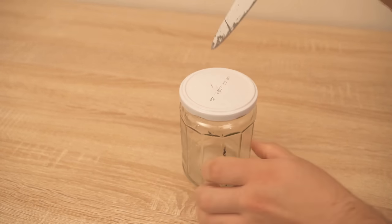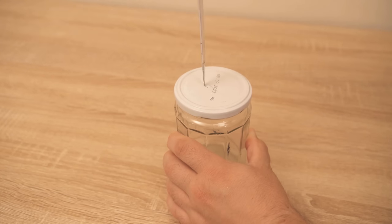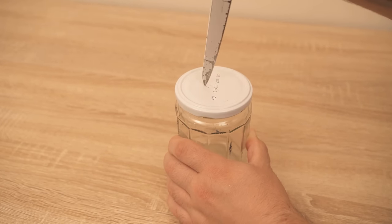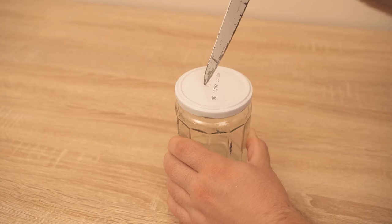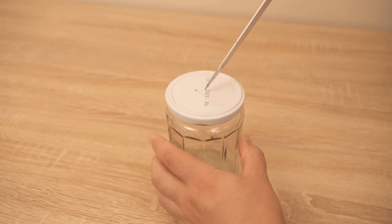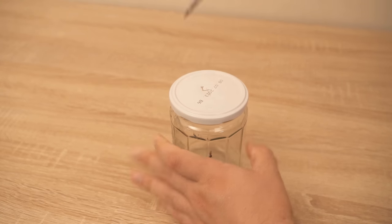For this I now take such a glass and cut a hole in the lid here. For this you need a sharp knife, a pocket knife is best suited for this. Unfortunately I do not have it at hand so I took such a kitchen knife and cut a small hole in the lid.